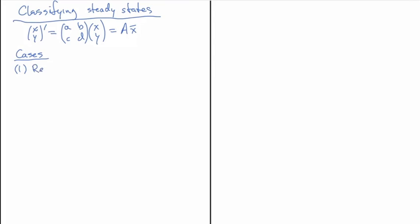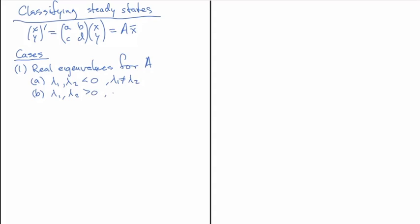There are a bunch of cases that involve real eigenvalues for A. First, lambda 1 and lambda 2 are both strictly negative and distinct. Then we have a case where lambda 1 and lambda 2 are both positive and distinct. And then we have a case where lambda 1 and lambda 2 have opposite signs — represented by the product of the two eigenvalues being negative, which ensures one is positive and the other negative.